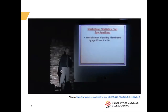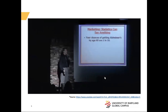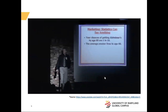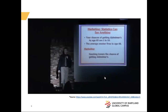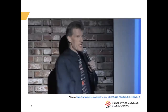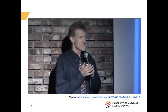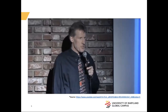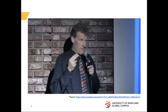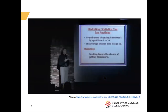Another quick example: your chances of getting Alzheimer's by age 85 are one in ten — kind of scary actually. The average smoker lives to be age 66. So if you were in marketing at a cigarette company, you could say smoking lowers your chance of getting Alzheimer's. Absolutely correct statement. I can see the commercials now: go ahead, light up, you won't be getting Alzheimer's.